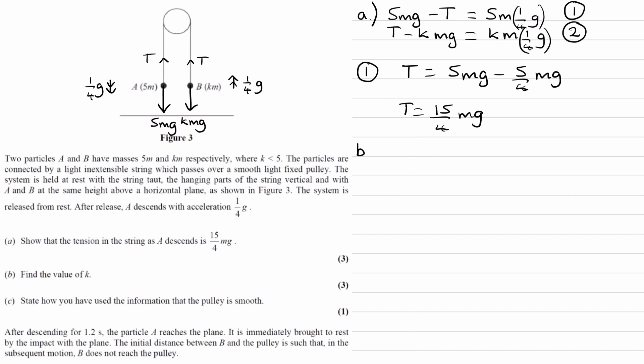And for part B, we're trying to work out what k is. So we can now use equation 2 with the tension that we've worked out. 15/4 mg minus kmg is equal to this, which I'll write as 1/4 kmg. So to start with, I'm going to cancel out all the mg. So divide everything by mg.